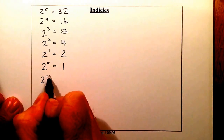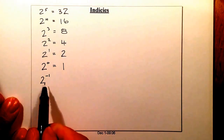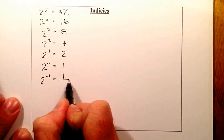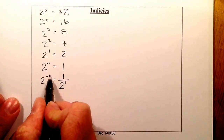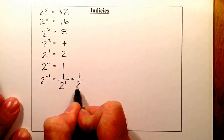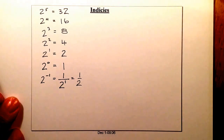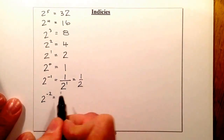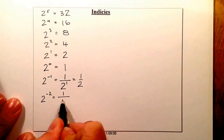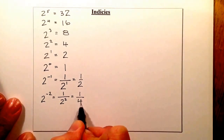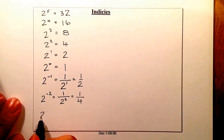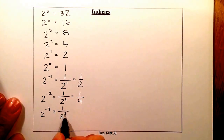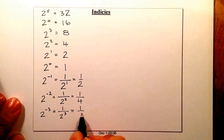Moving into negative indices: 2 to the power of minus 1 means 1 over 2 to the positive 1, which equals a half. 2 to the power of minus 2 is 1 over 2 to the power of 2, which is a quarter. And 2 to the power of minus 3 is 1 over 2 to the power of 3, which is 1 over 8.